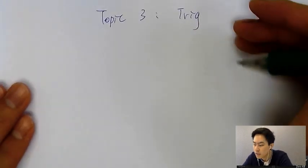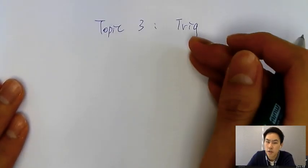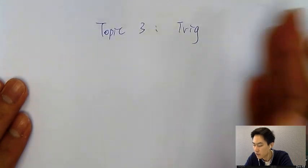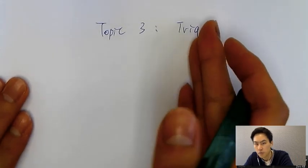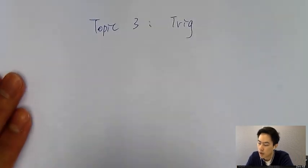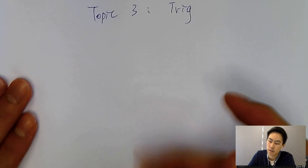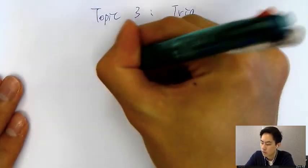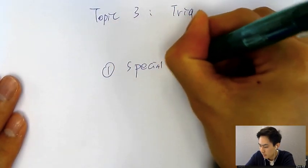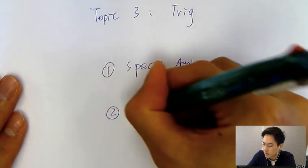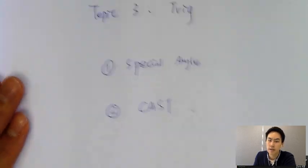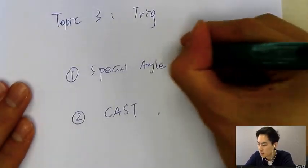This is Edward from Hong Kong Excel. In this video I'll teach you the concept and also the exam question type for IB trigonometry. I'll teach you two things today: the first is special angles, and the second is the CAST rule.